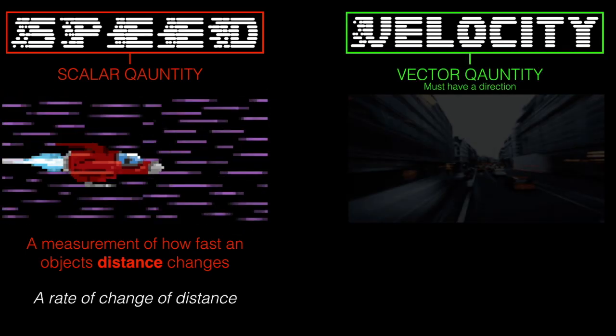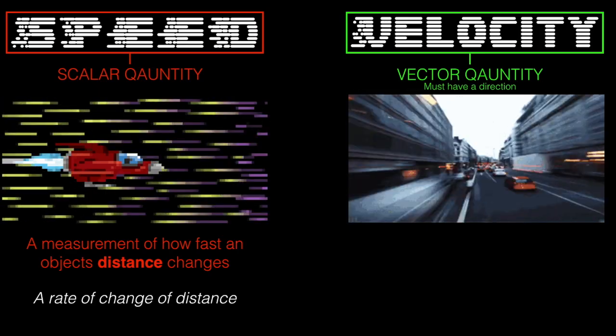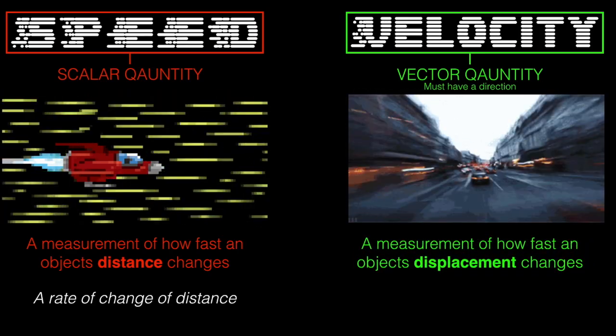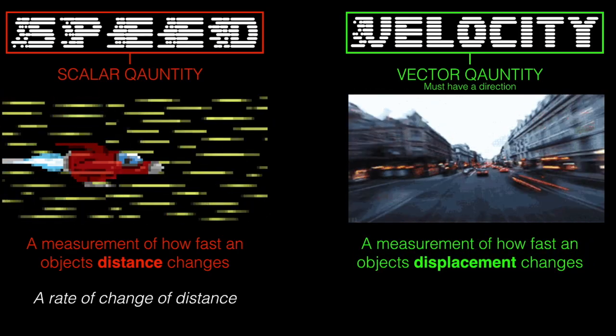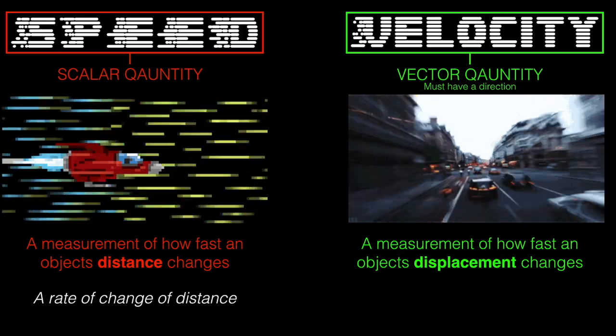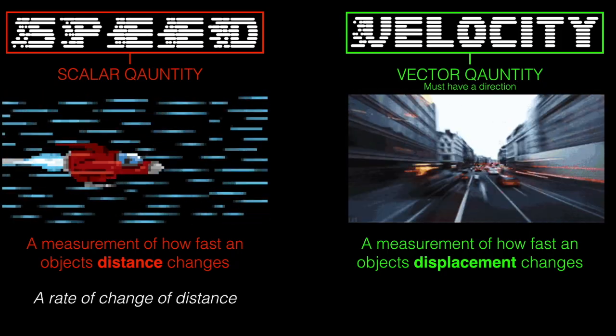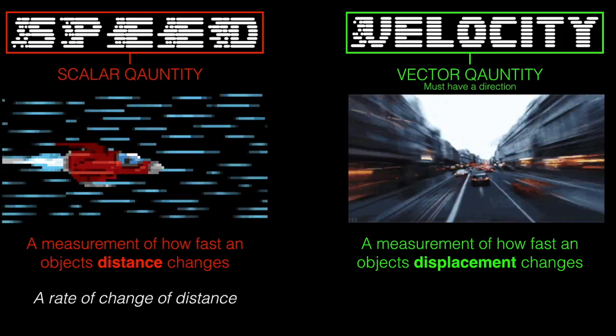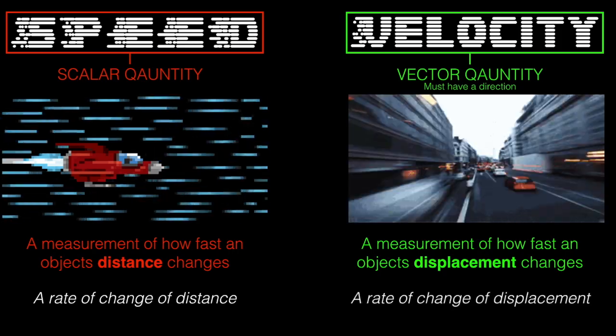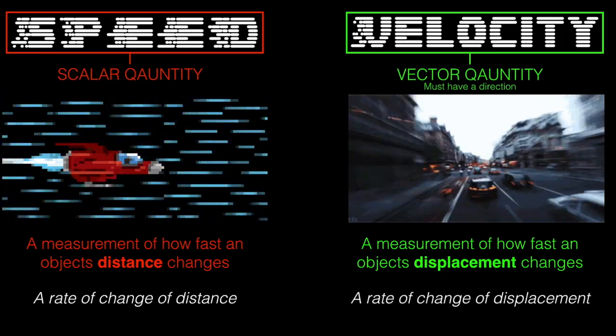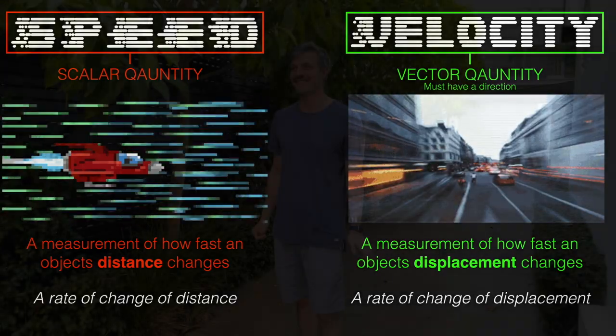Velocity is a measurement of how fast an object's displacement changes. We need to really think about the difference between distance and displacement. Velocity can then be said to be a rate of change of displacement. So what do we mean by a rate of change of distance versus a rate of change of displacement? Let's start with speed first, which is a rate of change of distance.